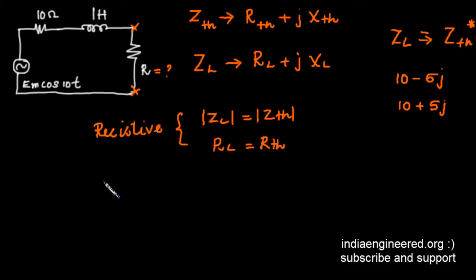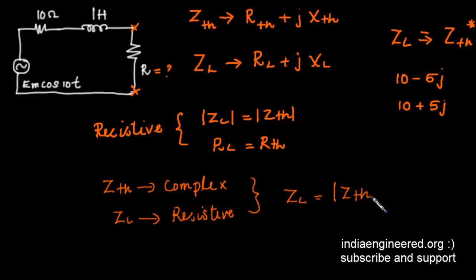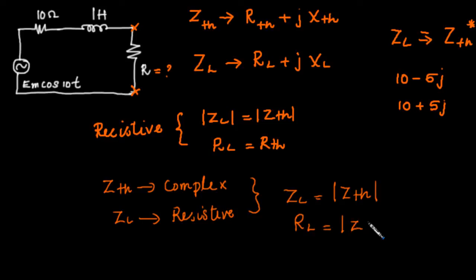Now let's say ZTH is complex, meaning it has both resistive and reactive parts, and ZL is purely resistive. What will be the condition? The load must equal the modulus of ZTH. That means ZL will be just RL, and RL should be |ZTH|.